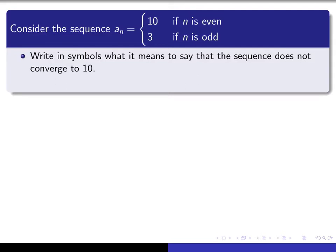Here you have a specific sequence that we're going to consider. It's a sequence that's equal to 10 when N is even, and it's 3 when N is odd. So this is an example of a sequence that does not converge to anything, because there's no particular real number that it seems to get close to for all large values of N. But we're not going to prove that. We're only going to try to prove that it does not converge to a specific number, in this case, 10. But we could easily adjust our proof to prove that it doesn't converge to anything. But in any case, write down in symbols what it would mean to say that the sequence does not converge to 10.